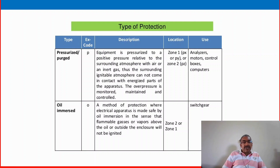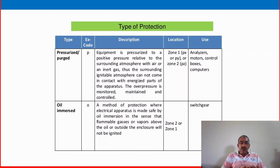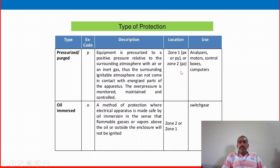Type of protection — pressurized or purged gas, code P: equipment is pressurized to a positive pressure relative to the surrounding atmosphere with air or an inert gas, so that the surrounding ignitable atmosphere cannot come in contact with energized parts of the apparatus. The overpressure is maintained and controlled, usually using a blanket gas — for example, inside a storage tank, equipment is always pressurized to maintain positive pressure. If the pressure drops below atmospheric pressure, air and oxygen mix with hydrocarbon gas creating a hazardous situation.